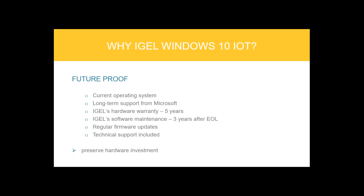The system is future-proof with a current operating system with long-term support from Microsoft. We have IGEL hardware warranty of five years for registered customers, and software maintenance three years after end of life. You will receive regular firmware updates from IGEL as well as Microsoft updates directly from Microsoft. Technical support is included.